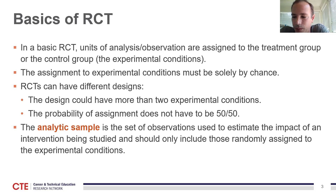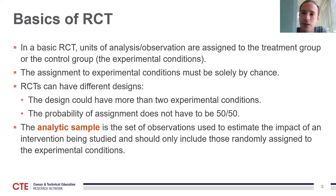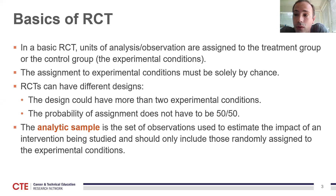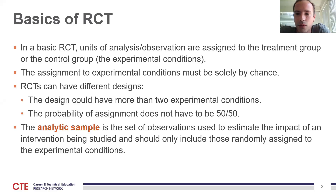The probability of assignment to the experimental conditions doesn't have to be the same for each condition. Rather than a 50-50 chance in a two-arm RCT, you can use a higher or lower proportion of eligible units assigned to treatment. The analytic sample should include only those individuals who are randomly assigned to one of the two experimental conditions — treatment or control. For example, if applicants are screened before random assignment with only those aged 18 to 24 eligible, the analysis sample should not include applicants outside that age range.